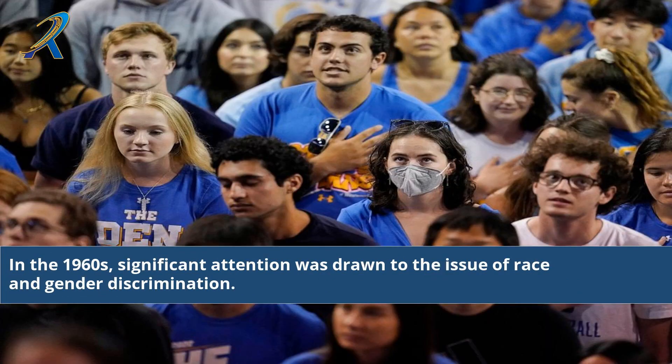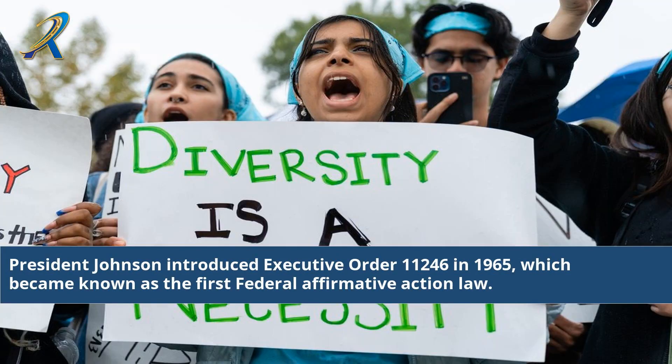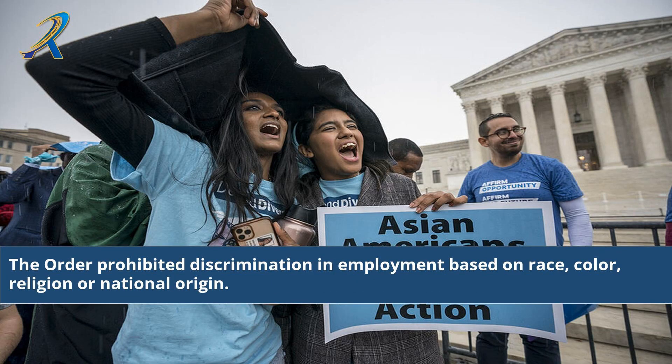In the 1960s, significant attention was drawn to the issue of race and gender discrimination. President Johnson introduced Executive Order 11246 in 1965, which became known as the first federal affirmative action law. The order prohibited discrimination in employment based on race, color, religion, or national origin.